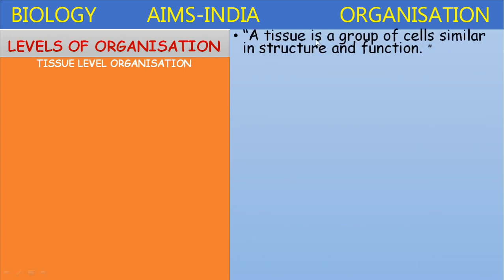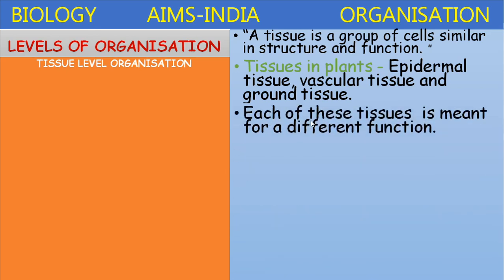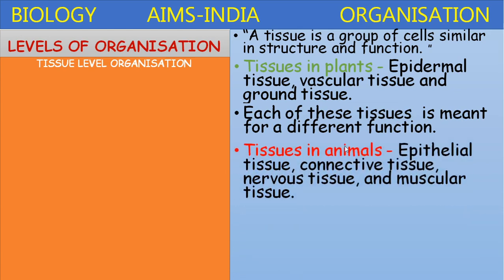First, let us discuss about the tissue level of organization. A tissue is a group of cells similar in structure and function. Tissues in plants are broadly classified into epidermal tissues, vascular tissue, and ground tissue. Each of these tissues is meant for a different function.